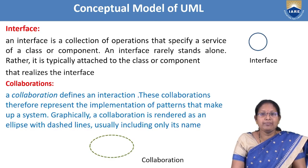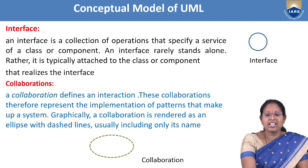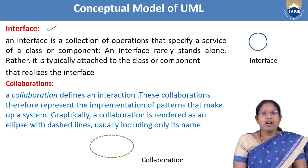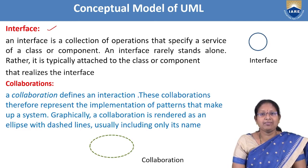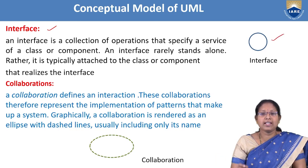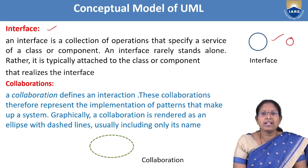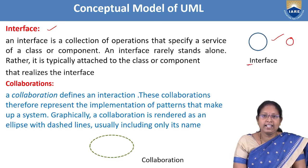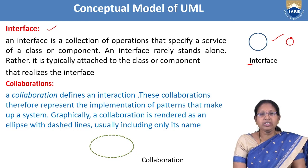The second structural thing is interface. An interface is a collection of operations that specify a particular service of a class. It is denoted by a small circle followed by a name that starts with the letter 'I'.